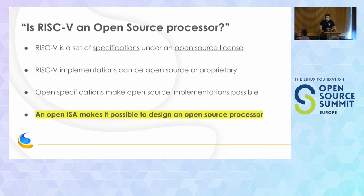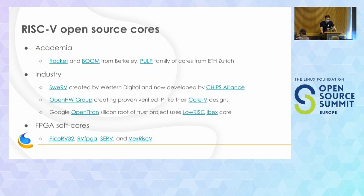RISC-V itself is not an open source processor — it's just a set of specifications under an open source license. So if something says it's RISC-V, it could be open source or it could be proprietary, depending on the implementation. But the thing I'm excited about is that open specifications make open source implementations possible. An open ISA makes it possible to have an open source processor design, and there are actually several open source cores available.